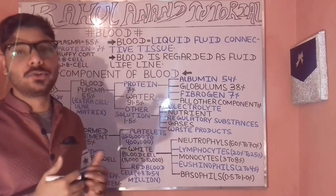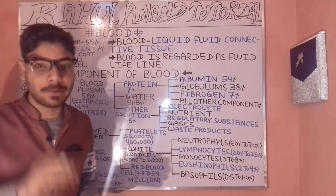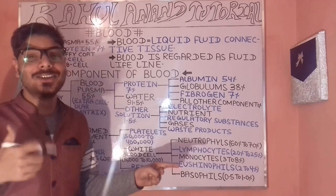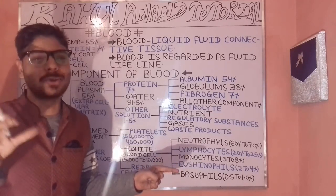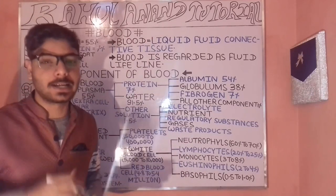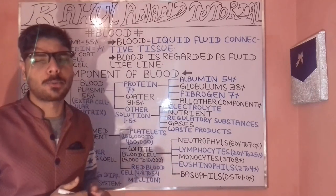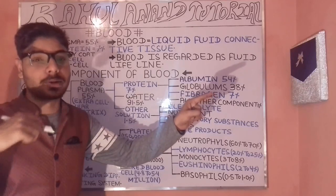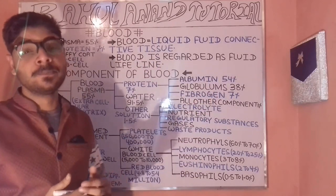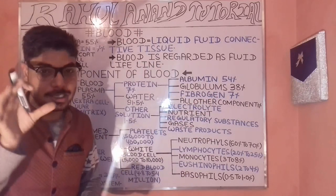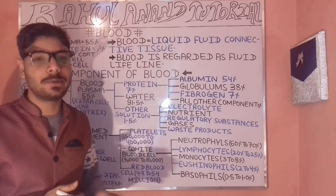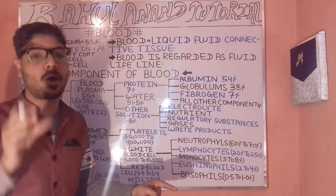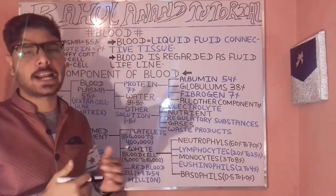Blood is regarded as the liquid fluid tissue. Tissue are groups of cells, further divided into broad categories: muscular tissue, connective tissue, and smooth tissue.